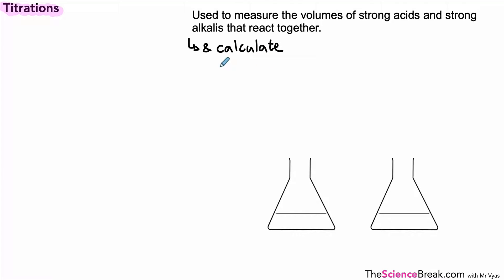We also use them to calculate unknown concentrations. When we talk about strong acids, the examples that we commonly use for GCSE chemistry are nitric acid, sulfuric acid, and hydrochloric acid. These are the common acids that we use.